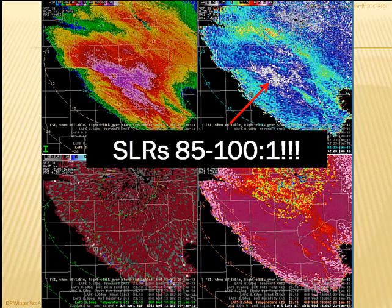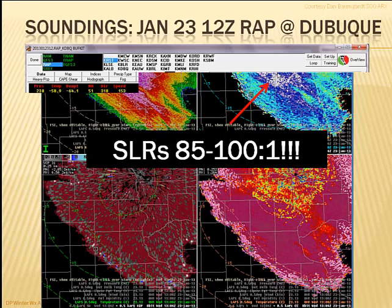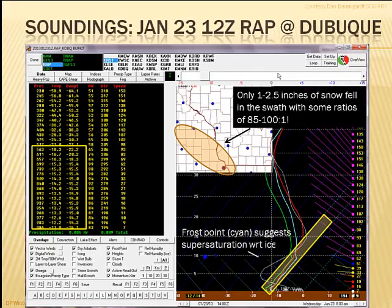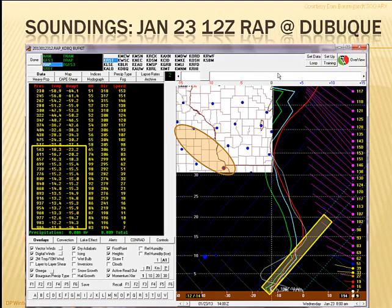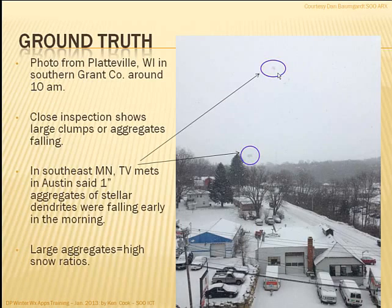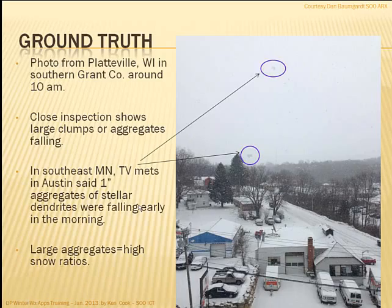You're able to pinpoint these things with more precision for the forecast. Verification from Dan shows very large snowflakes falling — a photo from Platteville, Wisconsin with snowflakes up to an inch in diameter. There were reports from various TV meteorologists as well. This verifies what we're seeing on radar: large aggregates mean high snow ratios.